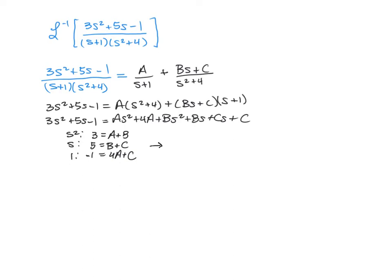So the row reduced echelon form we're going to use is going to first start off with the matrix [1, 0, 1, 3; 0, 1, 1, 5; 4, 0, 1, -1].